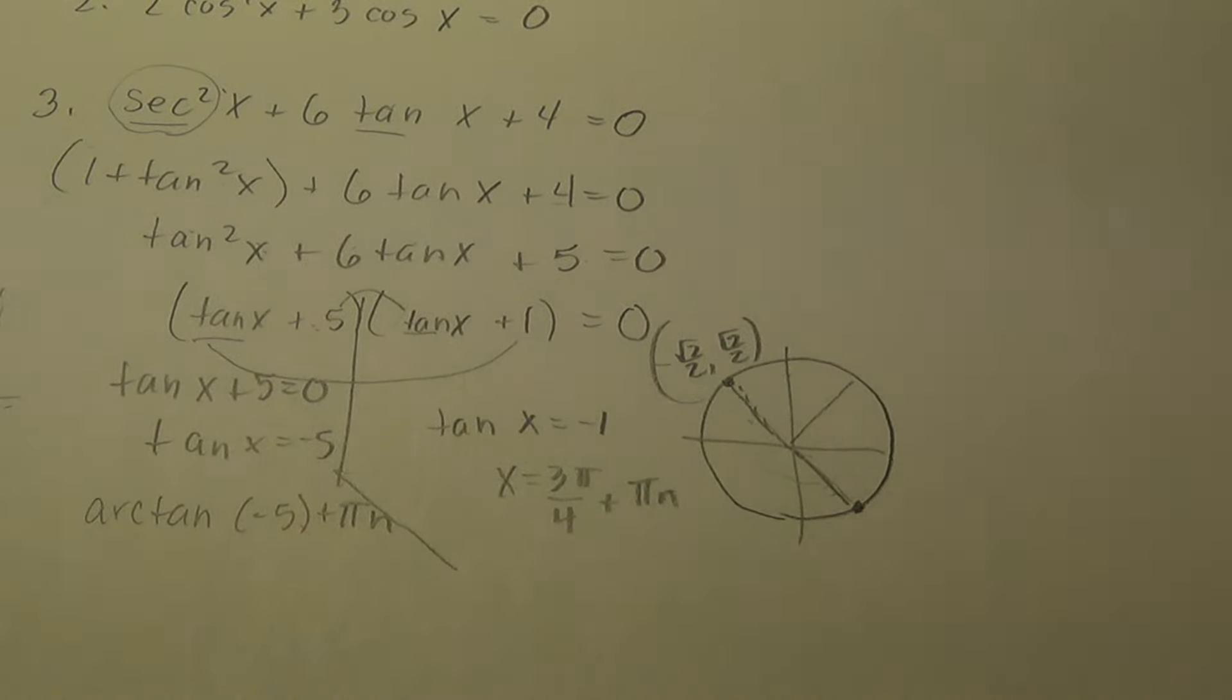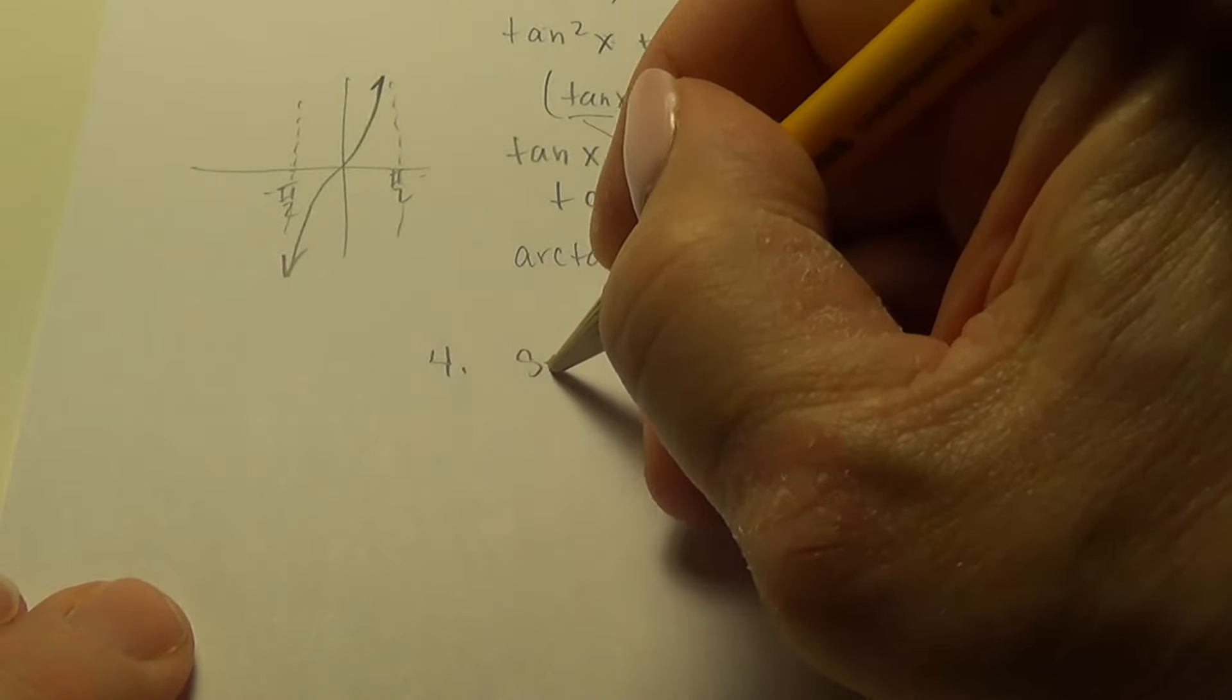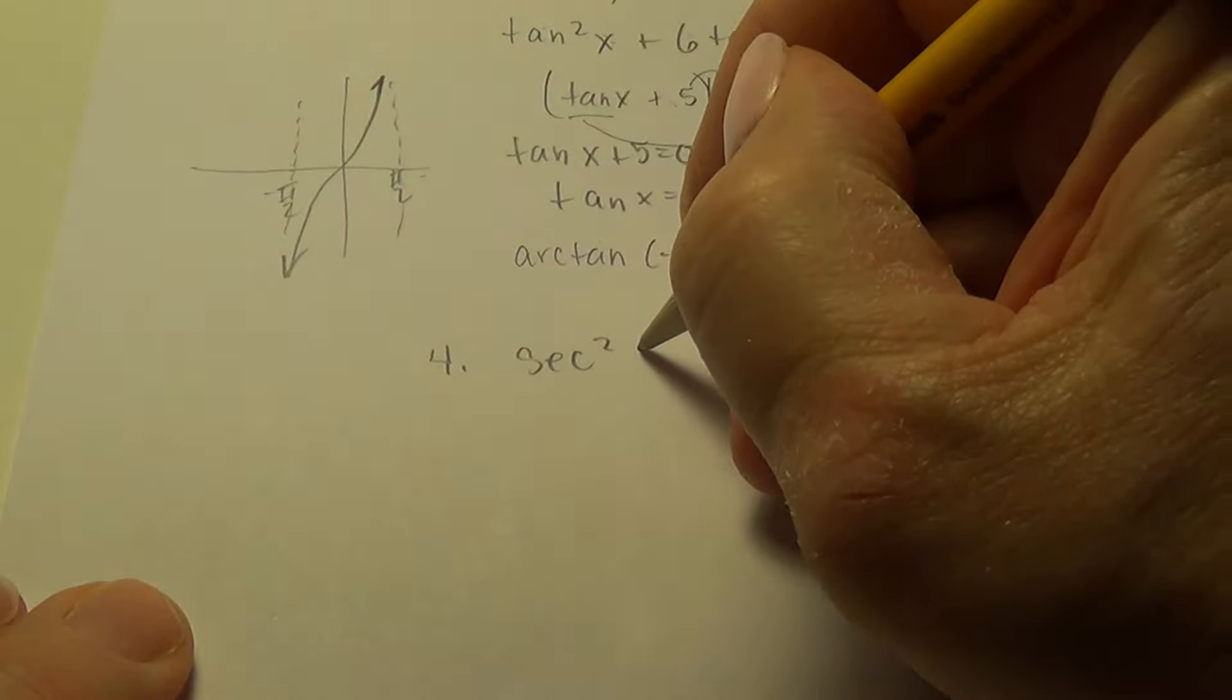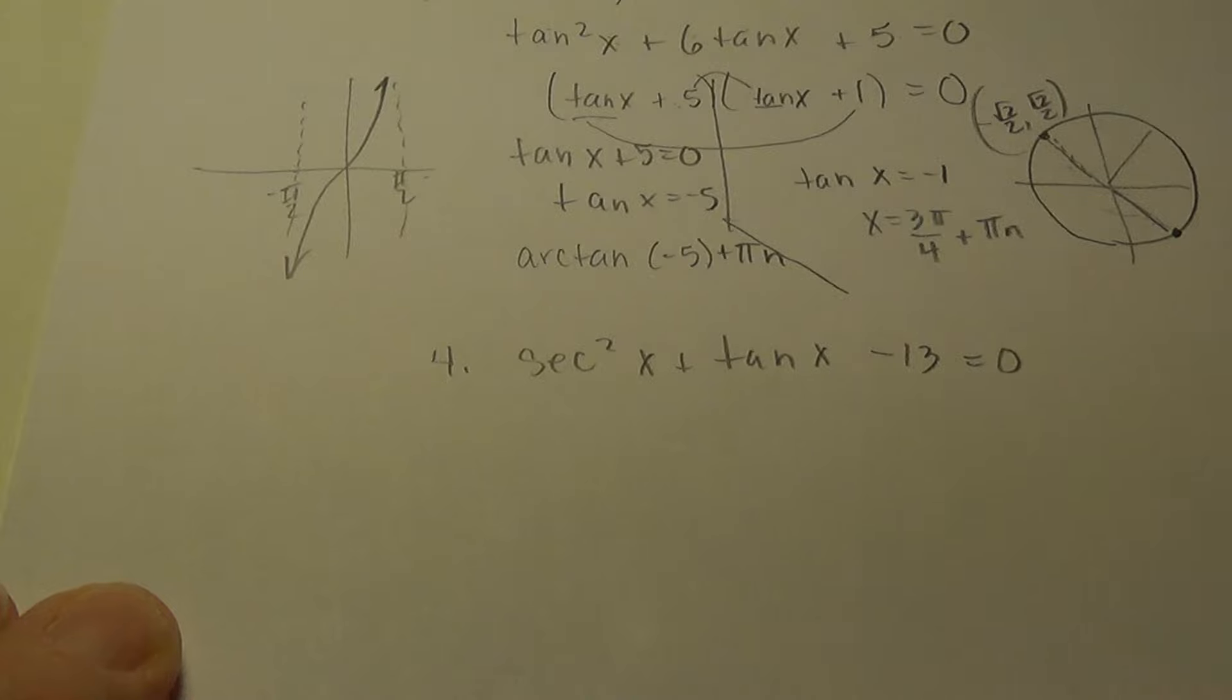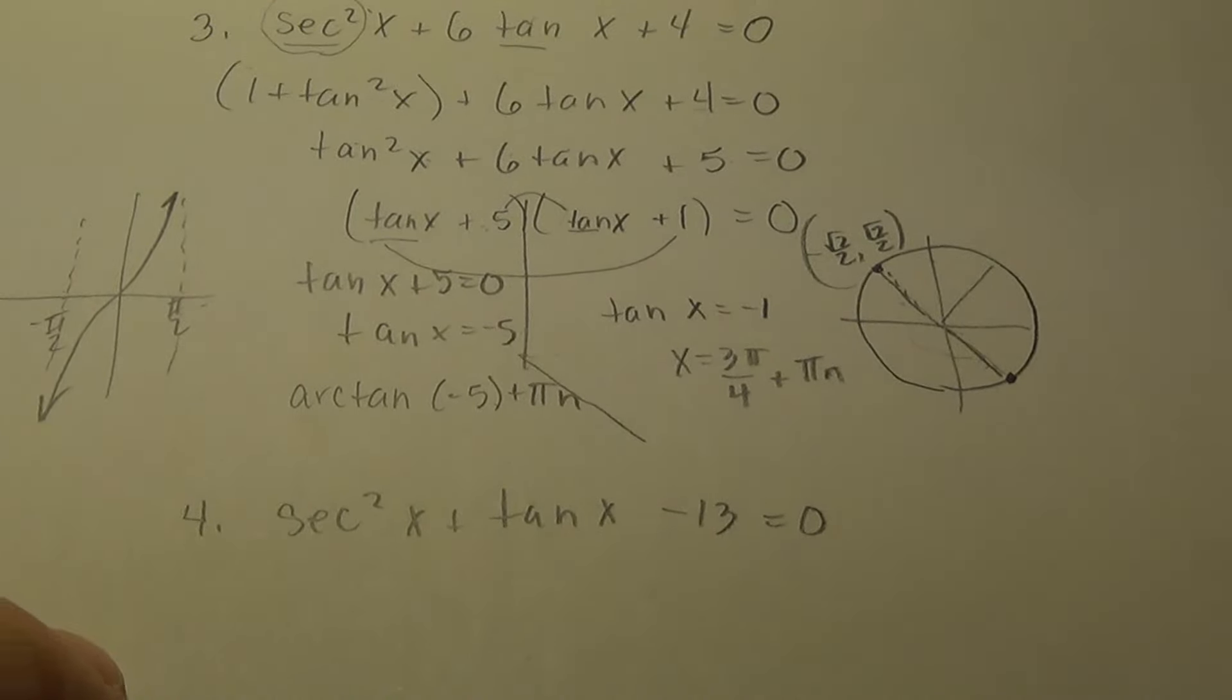Alright, try this one for your own. Second problem: 2sec²x + tan x - 13 = 0. See how that shakes out.